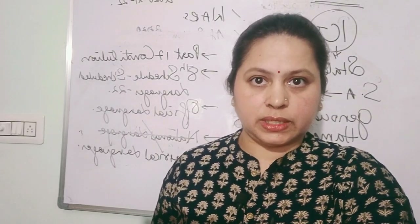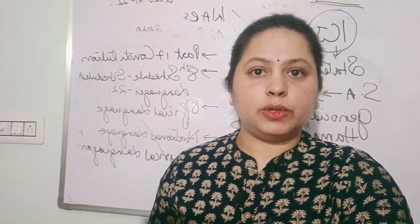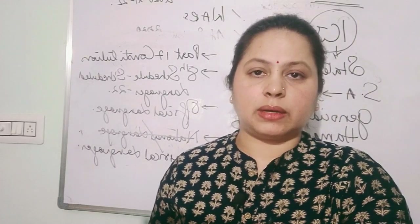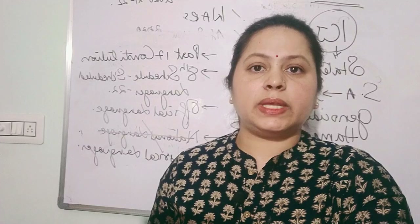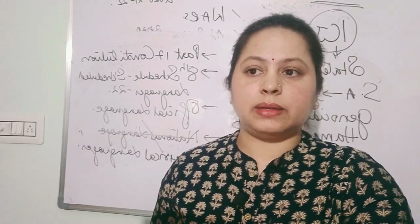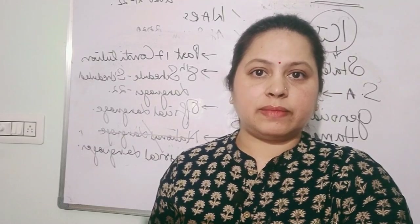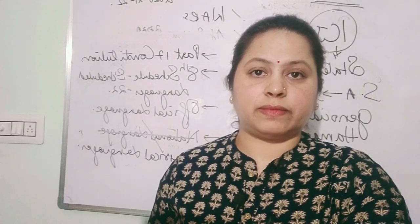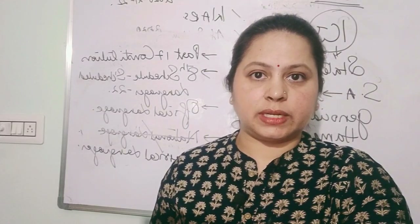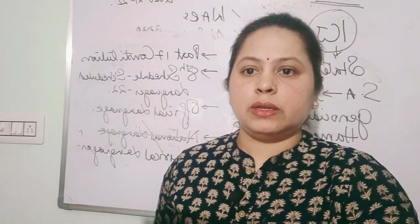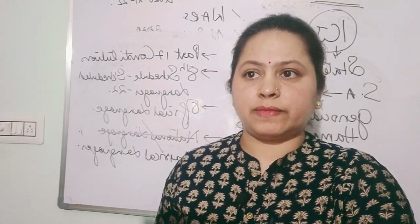Part C and D territories became union territories under the control of the centre. With the exception of Puducherry, Delhi, and Jammu and Kashmir, these union territories have state legislative assemblies with a chief minister and a council of ministers, which are representative bodies.